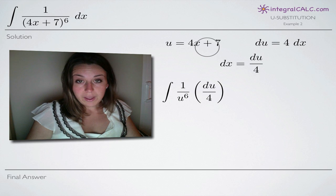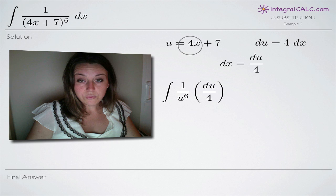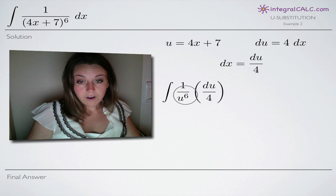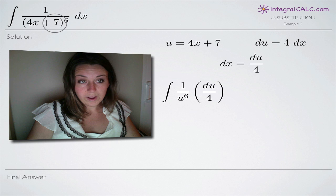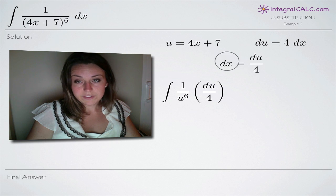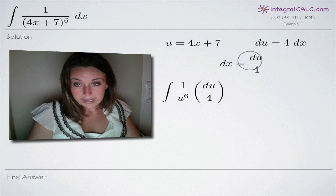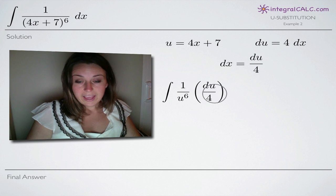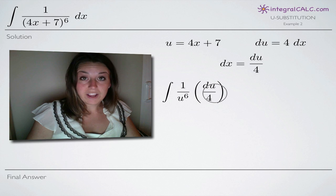When we do that, we're going to substitute u for 4x plus 7. So we'll end up with u to the 6 on the bottom instead of 4x plus 7 to the 6. And then in place of dx, since we solved for dx, we're going to plug in du over 4. So we put that in for dx and now we can simplify our integral.